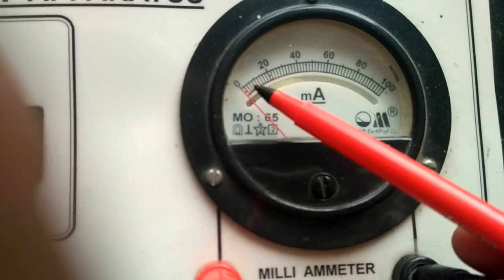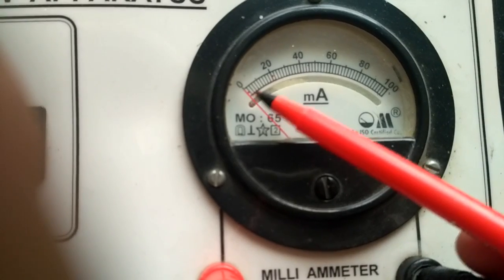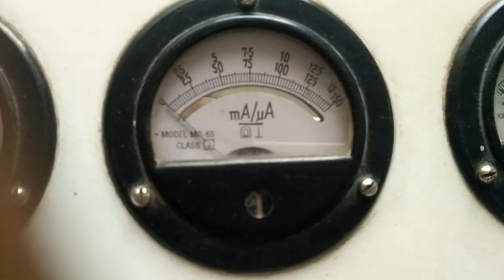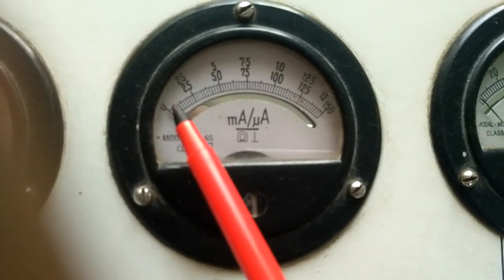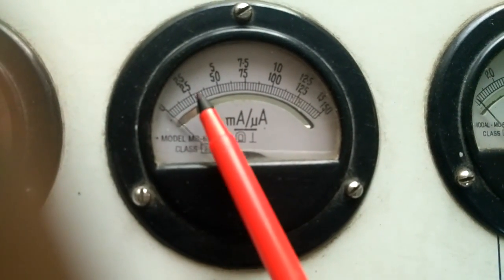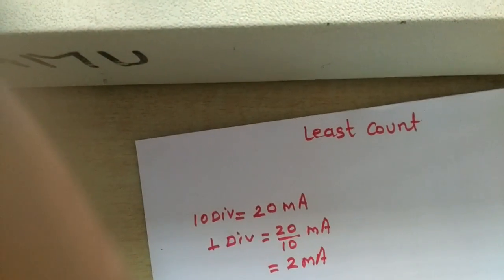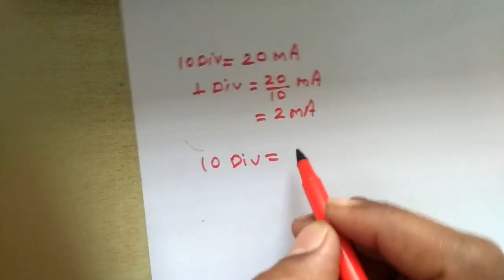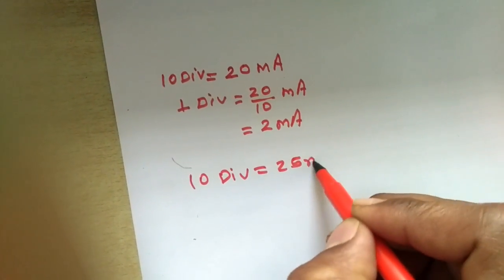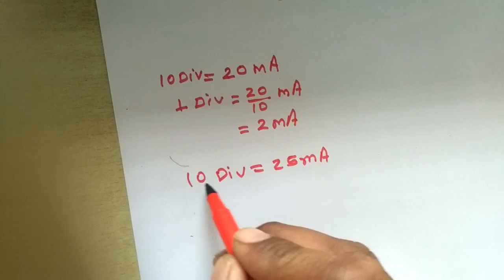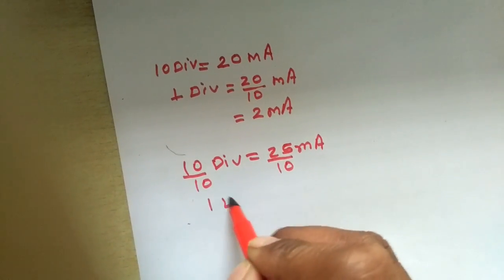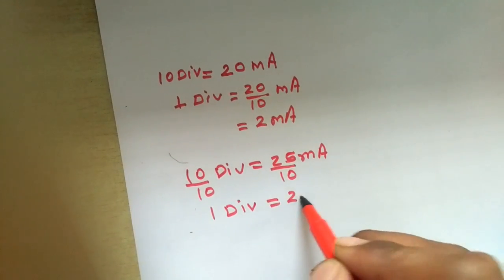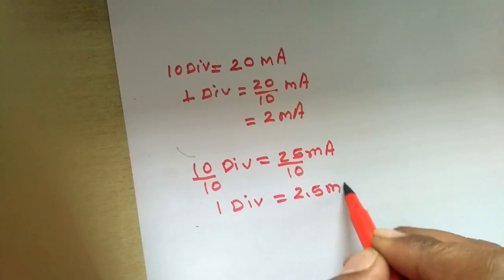If the indicator is at the first line, it is denoting 2 mA. Now I am showing you a different milliammeter or microammeter. You can see that this is zero and the next reading is 25. So 10 divisions here are showing 25 milliampere. Divide this value by 10: 1 division means 2.5 milliampere.